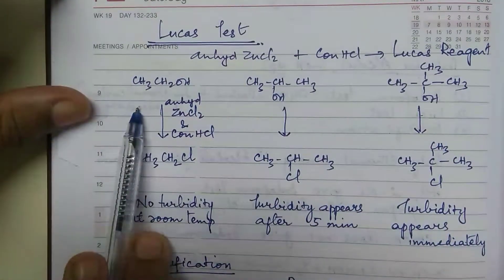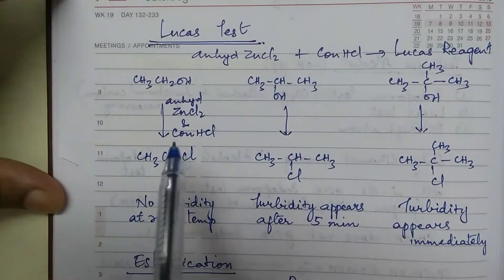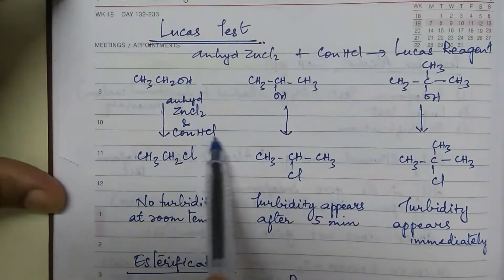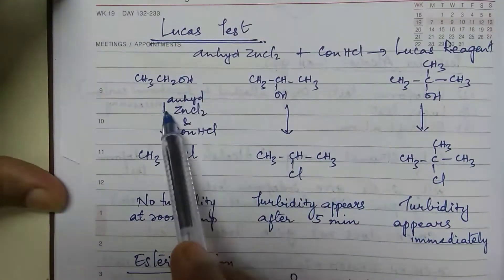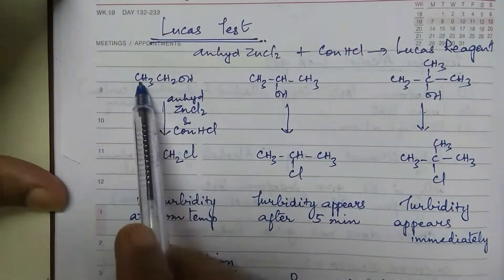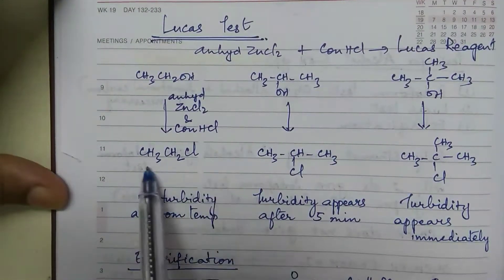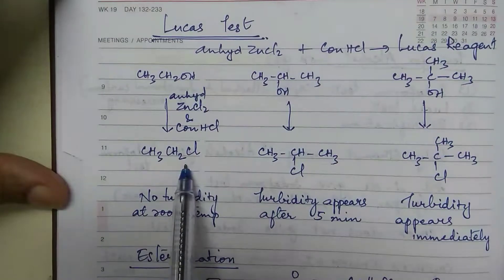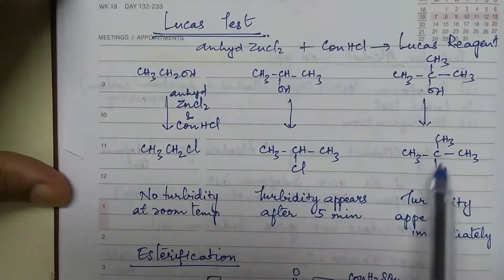Now how it is reacting with primary, secondary and tertiary alcohol? With primary alcohol, see in all the cases, it is basically alcohol with HCl and this is acting as a catalyst or it is acting as a dehydrating agent. So when you react it with HCl, what will happen? This OH will be replaced by Cl. So you will get the corresponding RX. Same way OH is replaced by Cl. Same way OH is replaced by Cl.